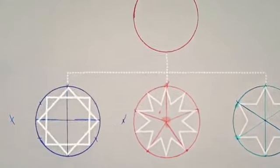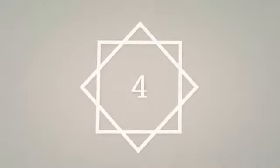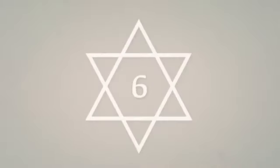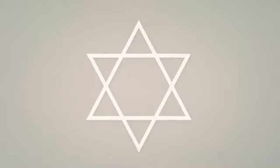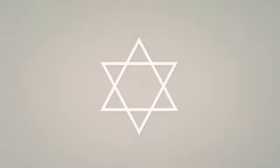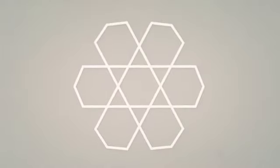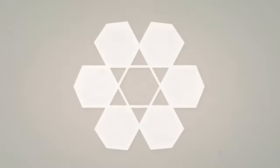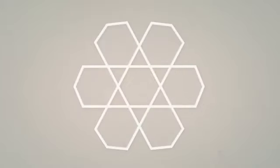There's an easy way to determine whether any pattern is based on fourfold, fivefold, or sixfold symmetry. Most contain stars surrounded by petal shapes. Counting the number of rays on a starburst, or the number of petals around it, tells us what category the pattern falls into.